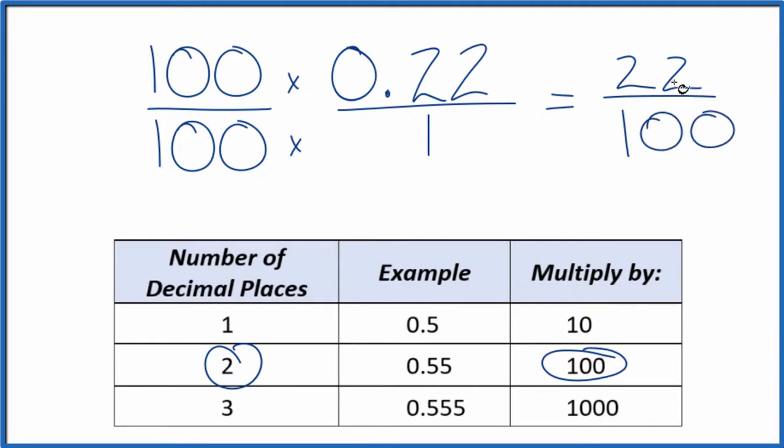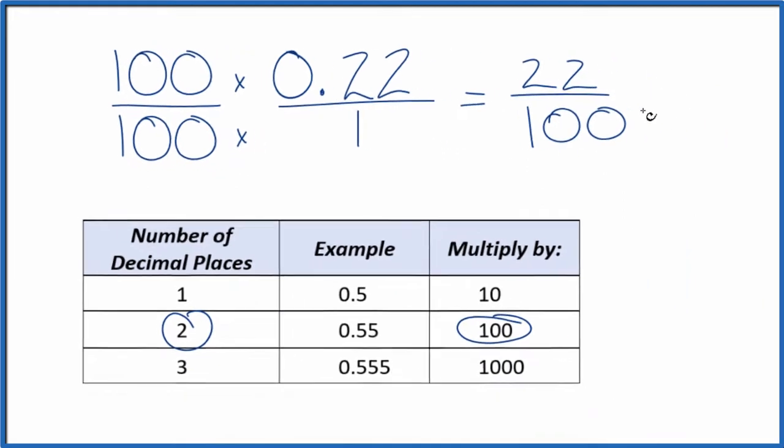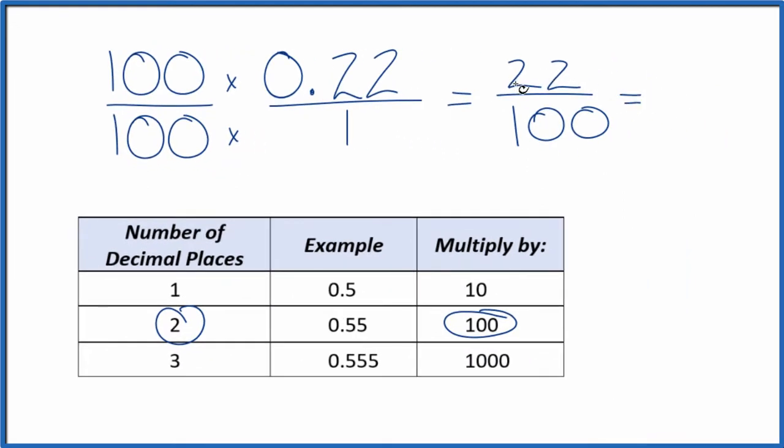So now we have a fraction, 22 over 100. And since they're both even numbers, let's divide them by 2. 22 divided by 2 is 11. 100 divided by 2, that's 50.